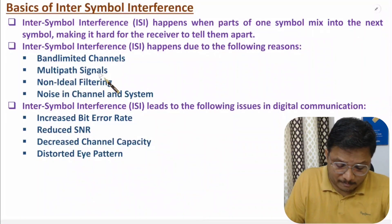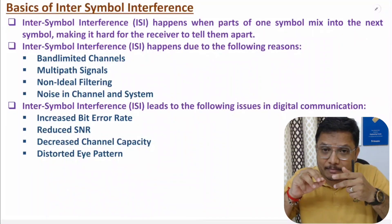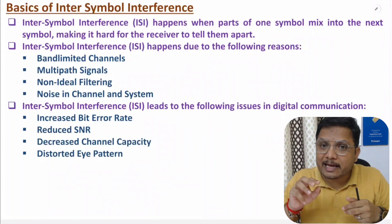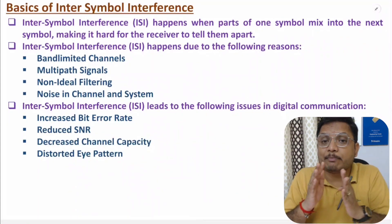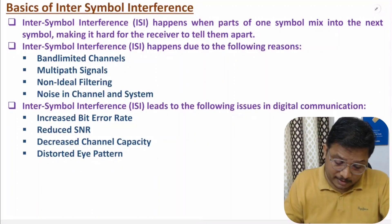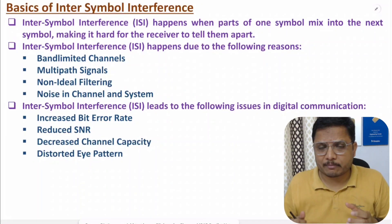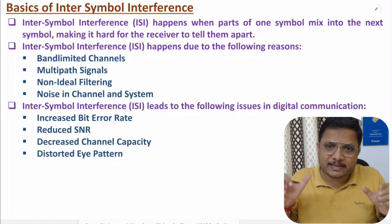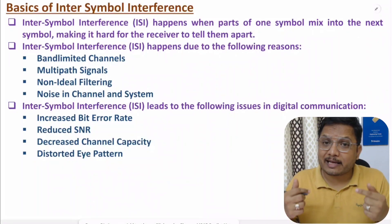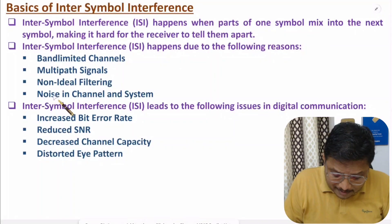The second cause is multi-path signal. When a receiver receives signals from multiple paths, there can be path delay between signals, and due to that delay there will be pulse broadening, which leads to ISI. ISI may also happen due to non-ideal filtering — in digital systems, transmitters and receivers use filters, and since we don't have ideal filters, there can be inter-symbol interference.